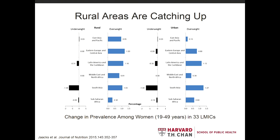When we look at within-country differences in urban versus rural areas, the main takeaway is that these blue bars show the annualized increase in overweight and obesity among women according to all different regions of the world. In both rural and urban areas across the board, we see increases in overweight and obesity among women. Interestingly, in many of these regions, the increases are actually greater in rural areas compared to urban areas. While cities have historically had higher prevalence of overweight and obesity, over time we're seeing much bigger increases in rural areas, which are quickly catching up to their urban counterparts.